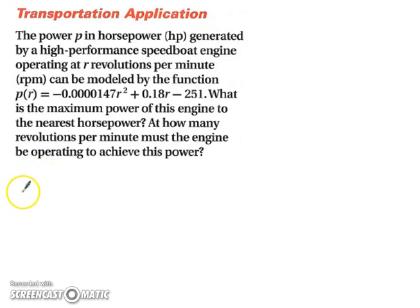Well, let's start with the fact that we need to find our r, which I would be going with. The opposite of b divided by 2a equals, so we have negative 0.18 divided by 2 times negative 0.0000147. Extend our fraction here. And this is about 6,122. So we're going to substitute this back in. Step one complete.